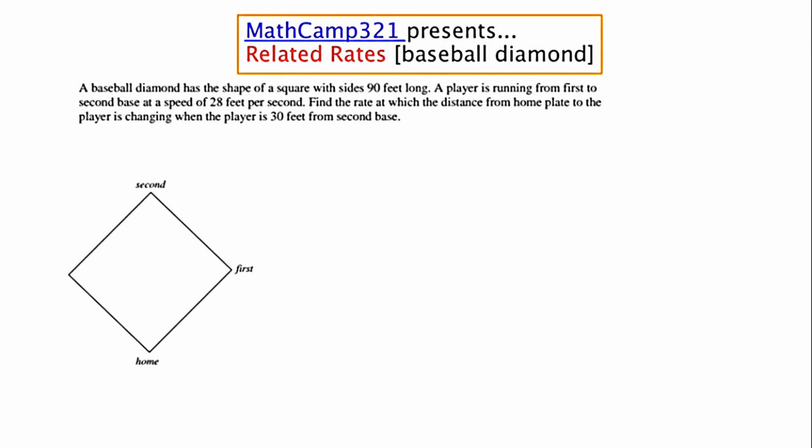A baseball diamond has the shape of a square with sides 90 feet long. A player is running from first to second base at a speed of 28 feet per second. Find the rate at which the distance from home plate to the player is changing when the player is 30 feet from second base.